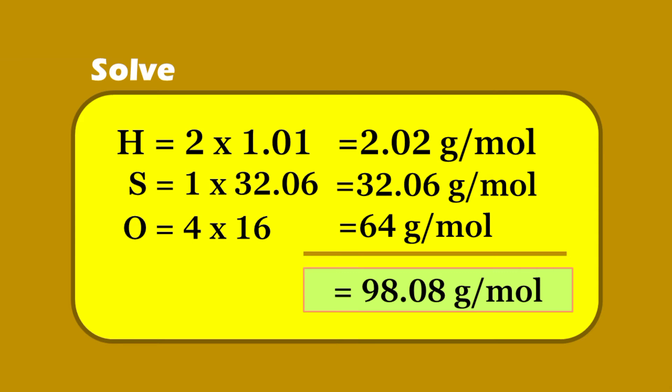Sulfur: one atom times 32.06 grams per mole is equal to 32.06 grams per mole. Oxygen: four atoms times 16 grams per mole is equal to 64 grams per mole. Let's add them.